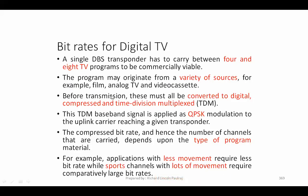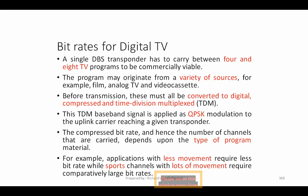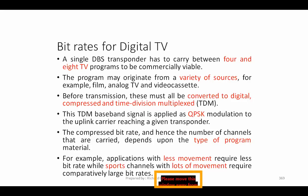Before transmission, all programs must be converted to digital, compressed, and TDM must happen. Once content is compressed, a lot of data can be accommodated in a smaller space, allowing us to transmit more information with less bandwidth. If compression doesn't happen, we cannot transmit more content with the same space. We also need to concentrate on the quality of transmission, referring here to Time Division Multiplexing.